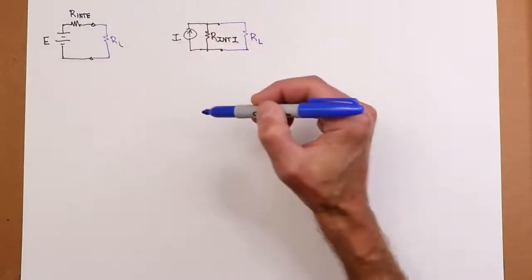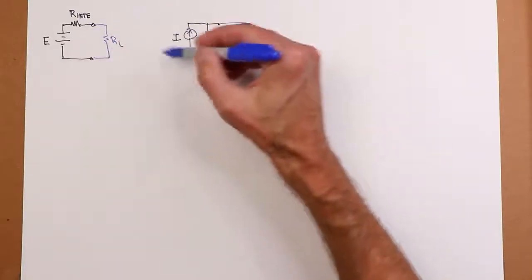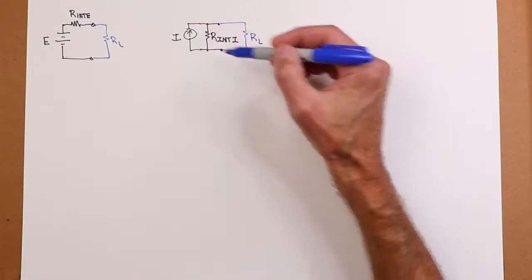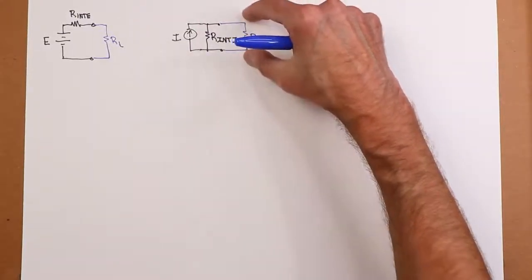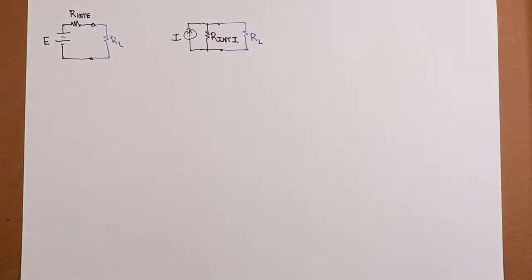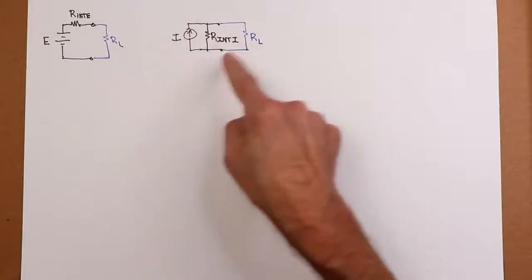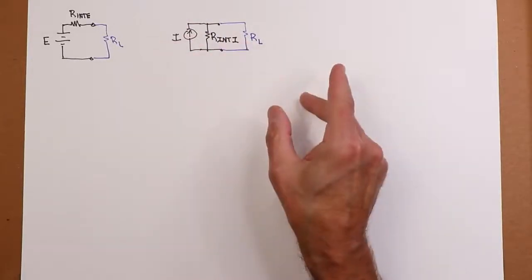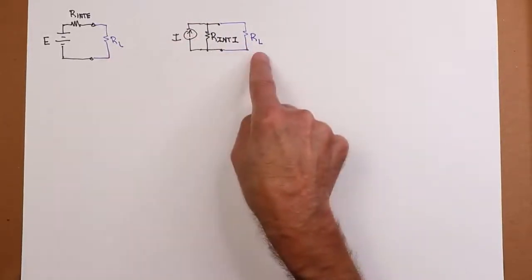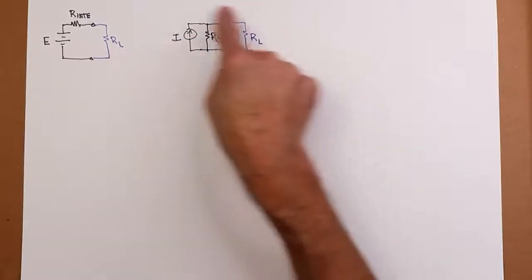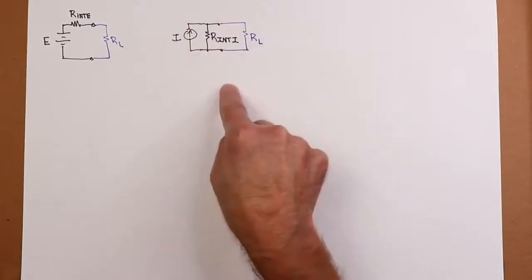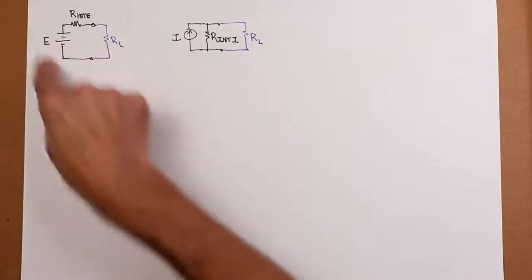Well, certainly we could imagine some current source and some R internal that if I put that same resistor over here, I would once again get five volts. That by itself is not really a crazy idea. What's more interesting though, is it possible to come up with a current source and internal resistance such that no matter what the value of RL is, I'll get the same load voltage and current in this circuit as I will in this circuit?